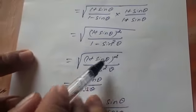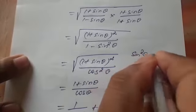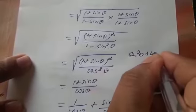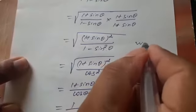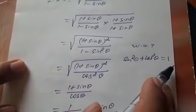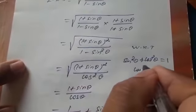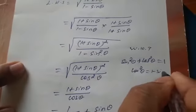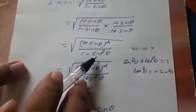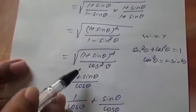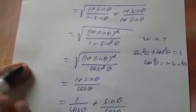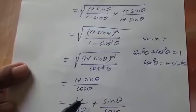Now, 1 minus sin squared theta is equal to cos squared theta, because we know that sin squared theta plus cos squared theta equals 1, so cos squared theta equals 1 minus sin squared theta. Applying this, the square cancels under the root, giving us (1 plus sin theta) divided by cos theta.